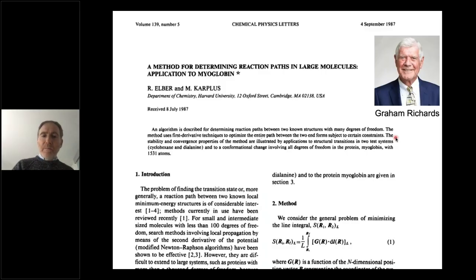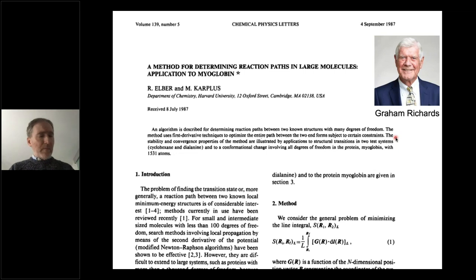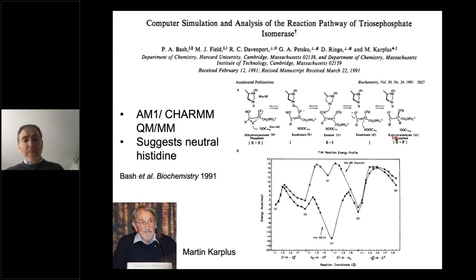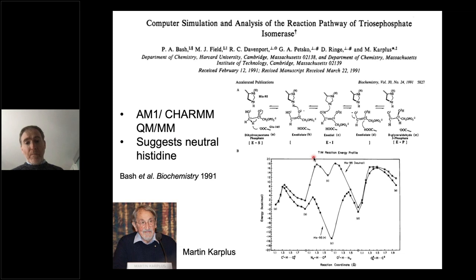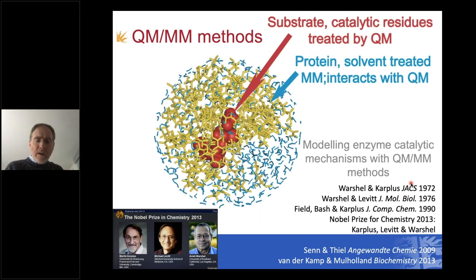This old idea — which has some merit — is that enzymes stabilize transition states. So if you can make a stable molecule that resembles a transition state, it should bind tightly to the active site and out-compete the substrate. Graham gave me a paper from Martin Karplus and Ron Levitt — this is a way to find transition states in big molecules — and said: why don't you implement this and apply it to triosephosphate isomerase, because Jeremy Knowles across the road works on that enzyme.